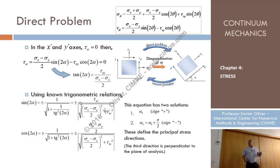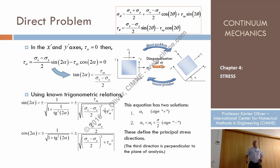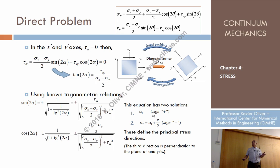By solving these equations, I have two angles. With the positive sign, one sine and one cosine define one angle alpha 1; with the minus sign, a second sine and cosine define the other angle alpha 2. One angle alpha corresponds to principal stress sigma 1, and the other, which differs by pi over 2, defines another plane that corresponds to sigma 2. The two principal directions are orthogonal, yielding alpha 1 with the plus sign and alpha 1 plus pi/2 with the minus sign.